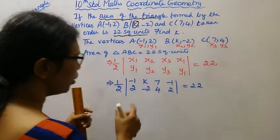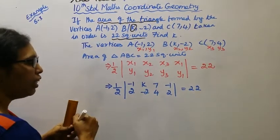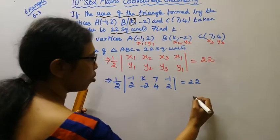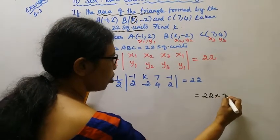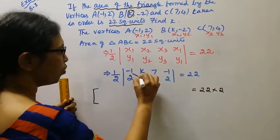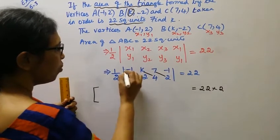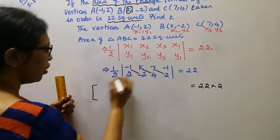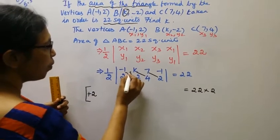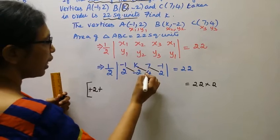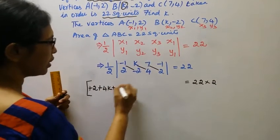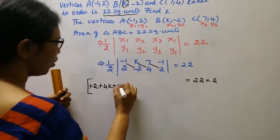Downward: -1 into -2, plus k into 4 which is 4k, plus 7 into 2 which is 14.